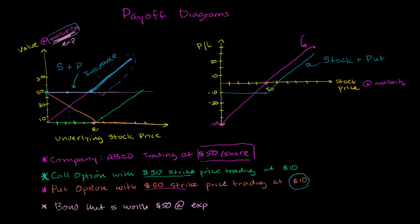So if you own the bond and the call option, below $50, the call option is worthless. So you're just going to have the bond over here. And then above $50, you still have the bond, but now the call option is worth something.